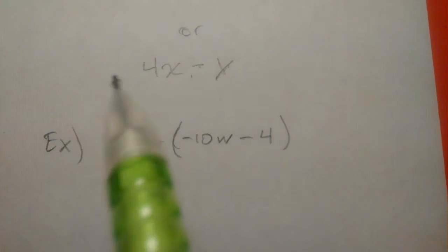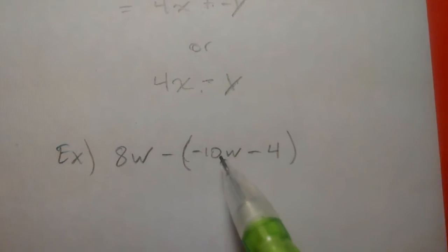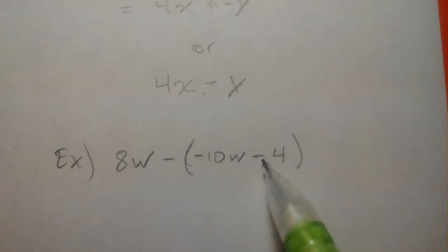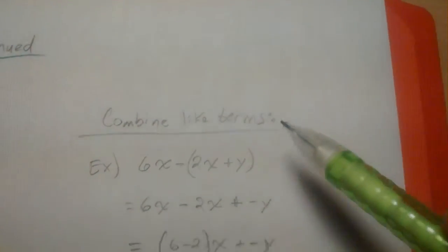One more here. 8w subtracting this quantity, negative 10w minus 4. So the goal here is to combine the like terms.